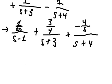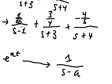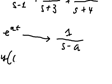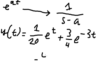Now we apply the inverse Laplace formula: 1 over (s minus a) corresponds to e to the at. Here a equals 1 for the first term, a equals negative 3 for the second term, and a equals negative 4 for the third term. The final answer is therefore expressed with the term having negative 3. This is the final answer. Thank you for watching.